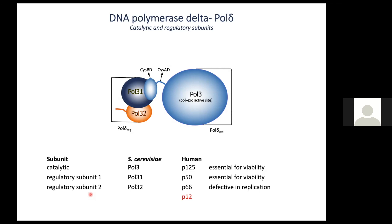There is a lot of interest in understanding the architecture of Pol delta and how it participates in various pathways and coordinates with other players. This enzyme is conserved across all eukaryotes, and in Saccharomyces cerevisiae it's composed of three polypeptides. The largest polypeptide is Pol3, which at its N-terminus harbors a large catalytic domain carrying two activities: a polymerase (DNA synthesis) activity and an exonuclease (proofreading) activity.